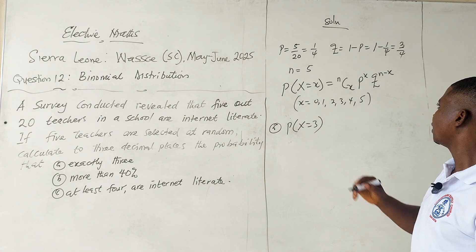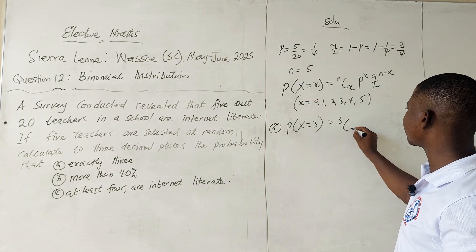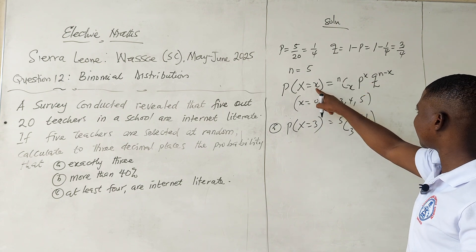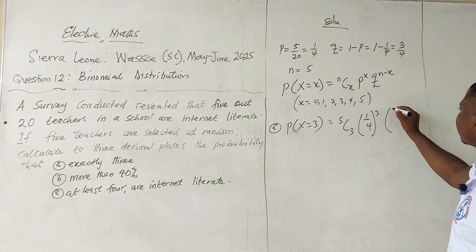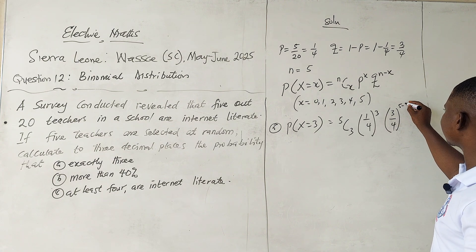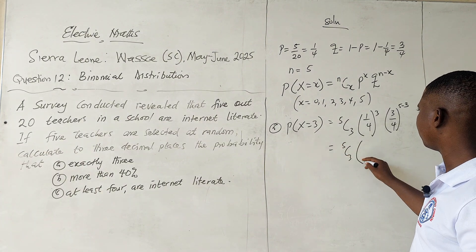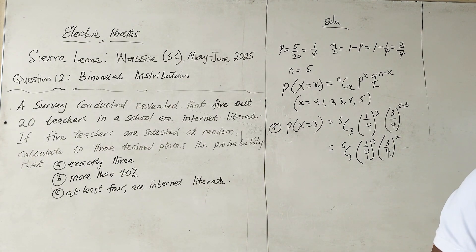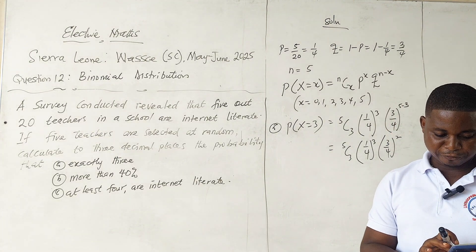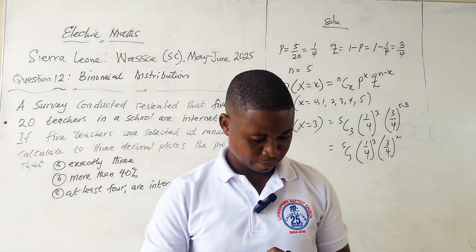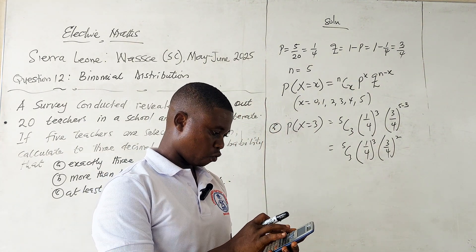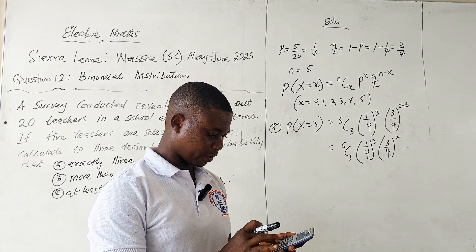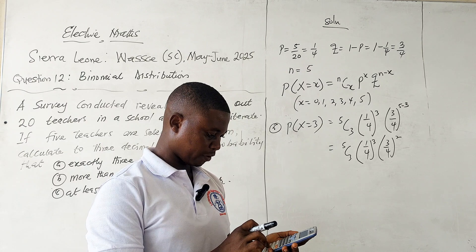Substituting into the formula: n = 5, so we have 5C3 × (1/4)^3 × (3/4)^(5-3). That gives us 5C3 × (1/4)^3 × (3/4)^2.